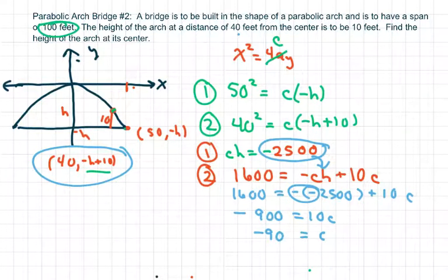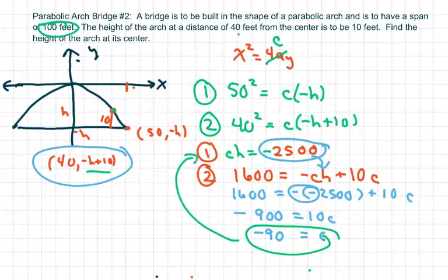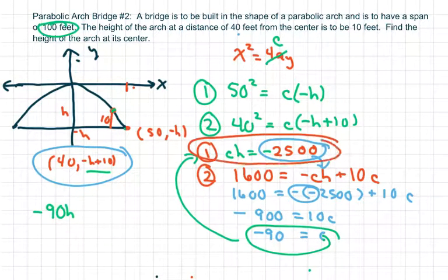Now I'm going to substitute back in. Since I have C equals negative 90, I'm going to substitute it back into this equation. So I get negative 90H. I'm just rewriting this equation here and substituting in my C. Equals negative 2,500.